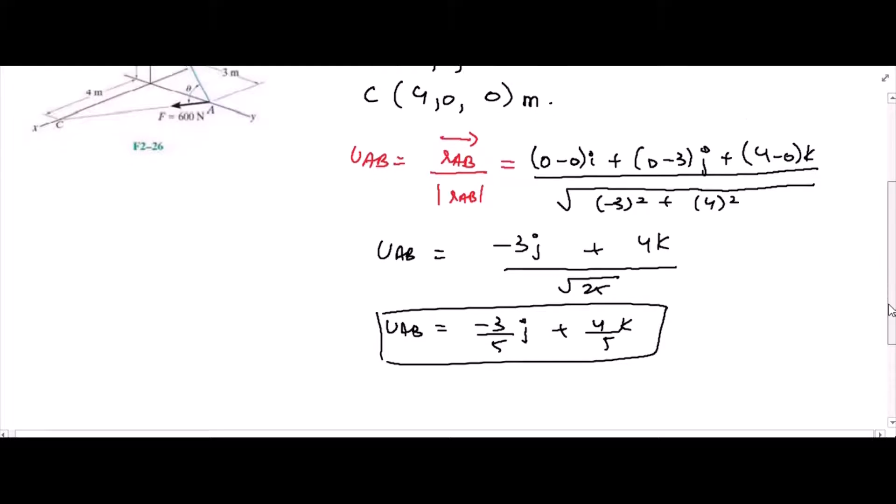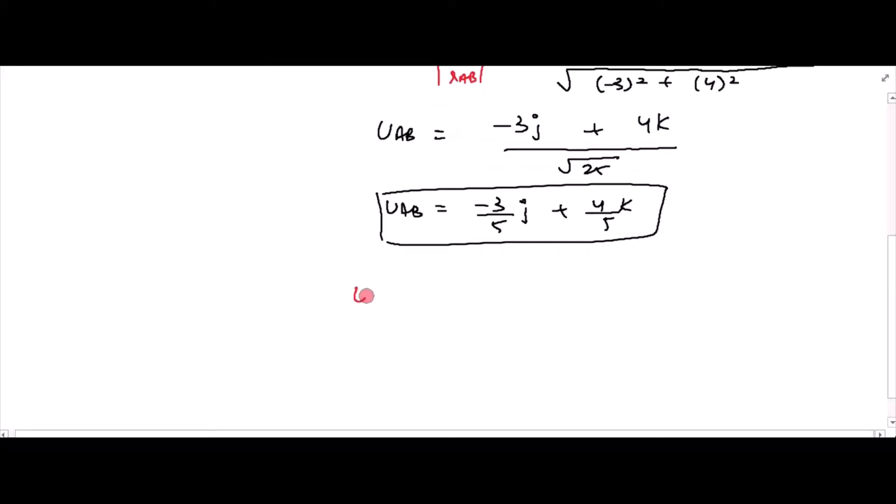For the unit vector UAC, UAC is equal to position vector RAC over its magnitude.